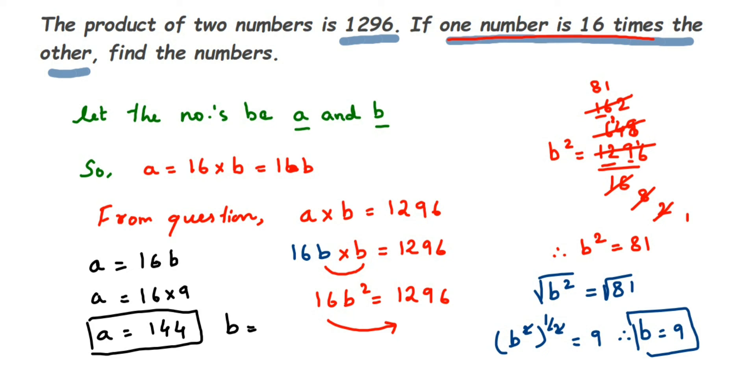So we have found both values: a is 144 and b is 9. When you multiply these two numbers you get 1296. I hope this question is clear — if you have any questions or doubts, you can drop a comment. Thank you so much.